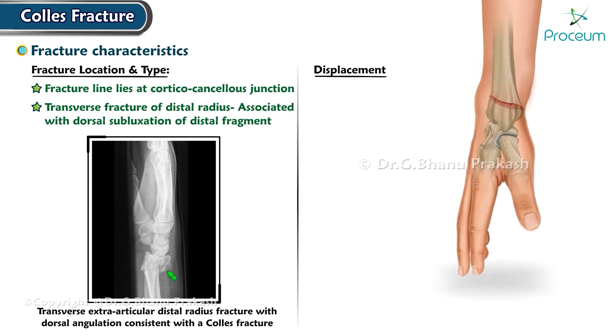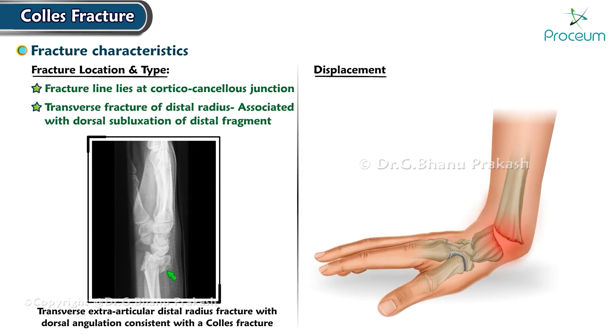Several displacements can occur with a Collis fracture, such as lateral tilt, lateral displacement, dorsal tilt, and supination.